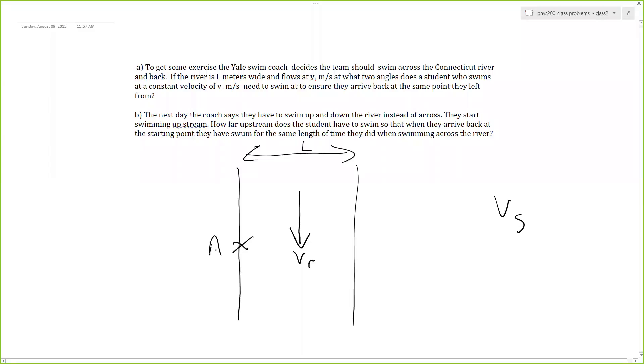So let's say they start here. So they will need to swim in this direction with the velocity Vs, which is constant, at an angle theta.